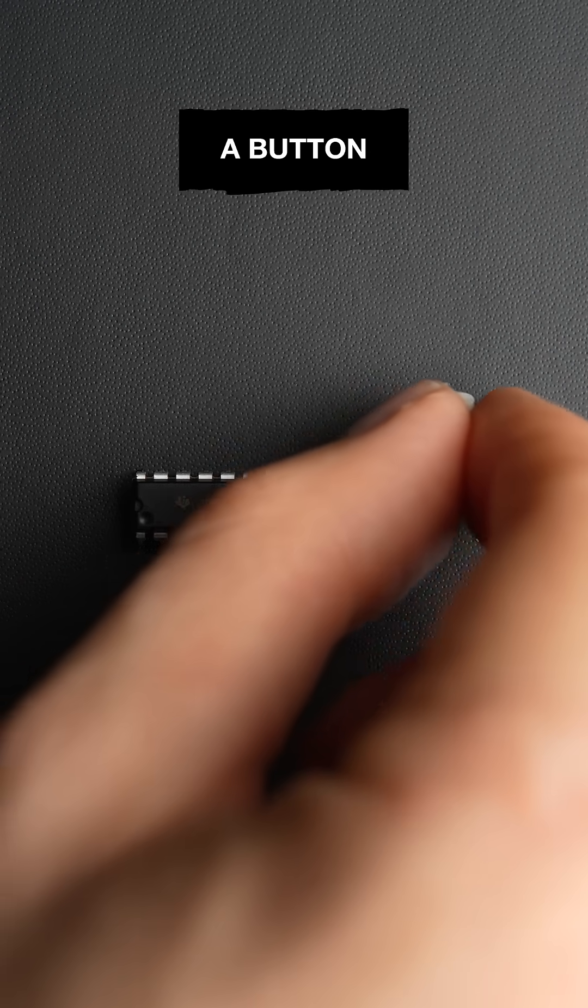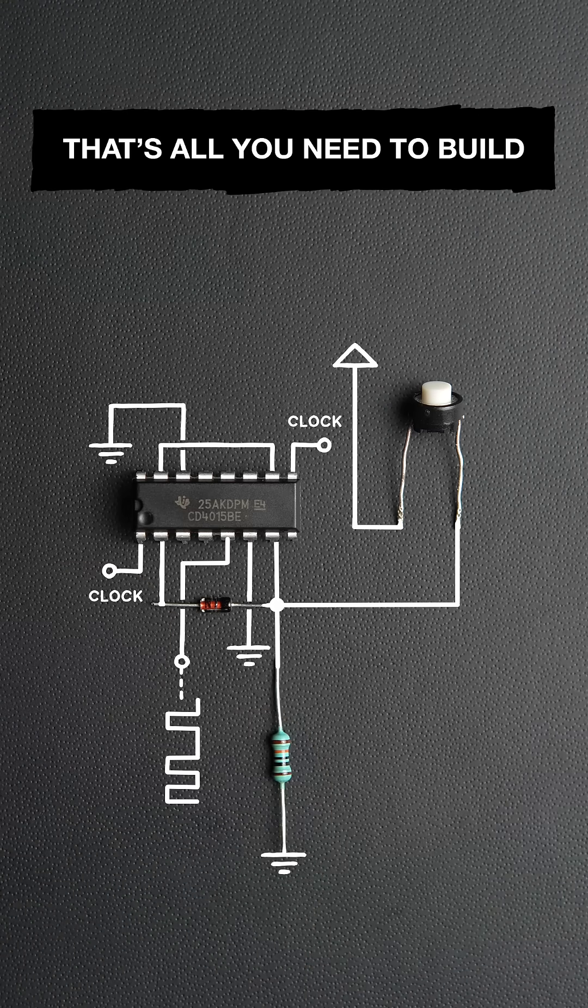A shift register, a diode, a button, and one resistor. That's all you need to build a bare-bones drum sequencer.